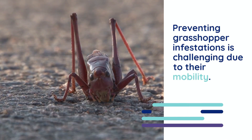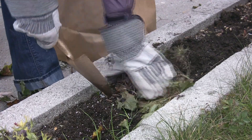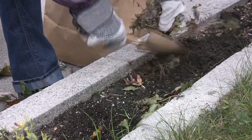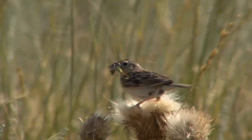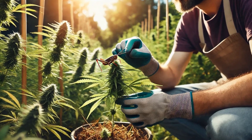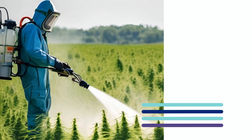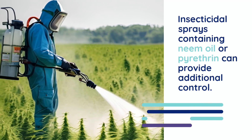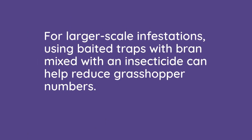Preventing grasshopper infestations is challenging due to their mobility. Maintaining a clean grow area by removing weeds and debris can reduce habitat suitability for grasshoppers. Introducing natural predators such as birds and beneficial insects can also help control their populations. When dealing with an active infestation, physical removal of grasshoppers can be effective. Insecticidal sprays containing neem oil or pyrethrin can provide additional control. For larger-scale infestations, using baited traps with bran mixed with an insecticide can help reduce grasshopper numbers.